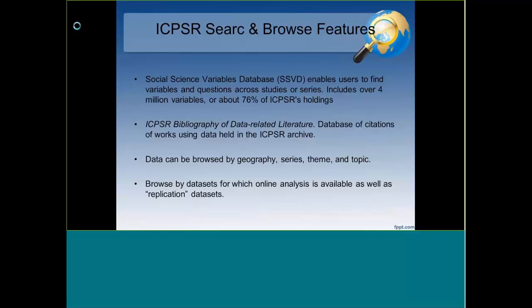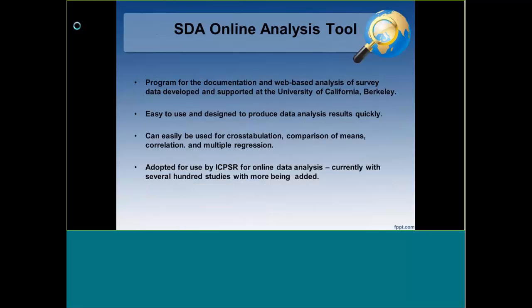ICPSR has a social sciences variables database that allows users to find variables and questions across studies or series. It has a bibliography of data-related literature. Data can be browsed by geography, series, scheme, or topic. It has datasets for which online analysis is available, as well as replication datasets, which allow users to repurpose data for their own uses or to replicate experiments which have already been done.